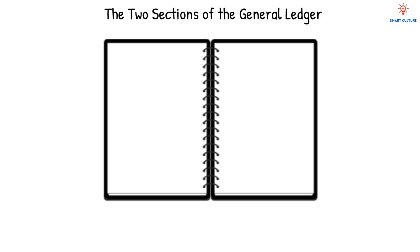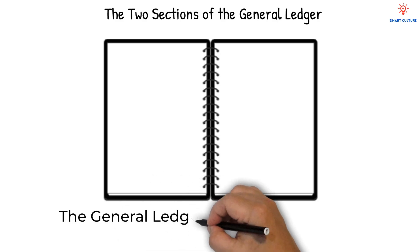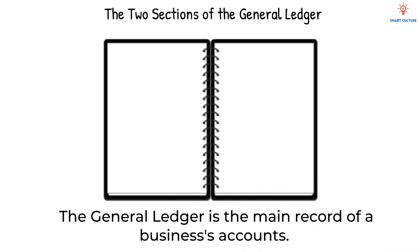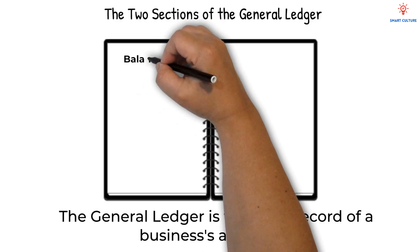The general ledger is the main record of all a business's accounts. Every single transaction the business makes is eventually recorded here. To keep things organized, the ledger is divided into two main sections: the balance sheet section and the nominal account section.